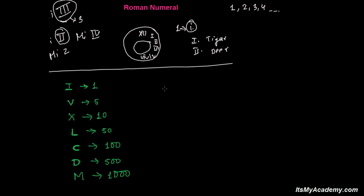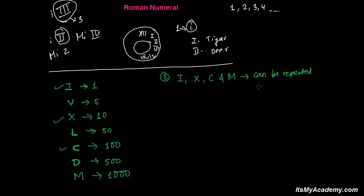Now there are a few rules I am telling you — keep in mind. The first thing: I, X, C, and M — these can be repeated, but maximum three times. So I, X, C, and M can be written maximum three times together. This is your first rule you must have to learn.